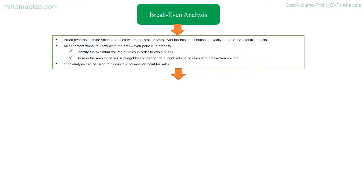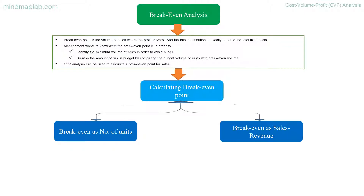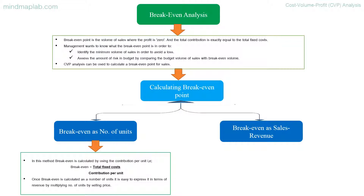Calculating break-even point: break-even can be calculated as a number of units or as sales revenue. Break-even in units is calculated using contribution per unit — break-even point equals total fixed costs divided by contribution per unit. Once calculated in units, it is easy to express in terms of revenue by multiplying the number of units by the selling price.